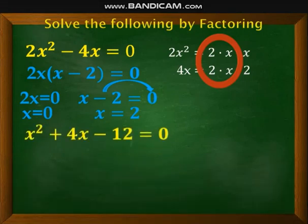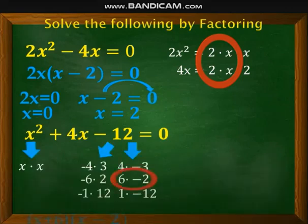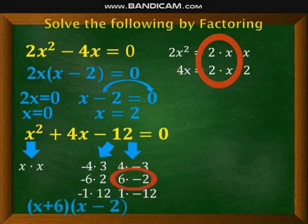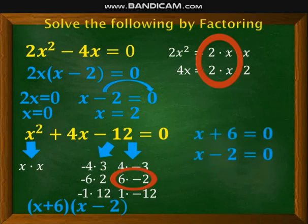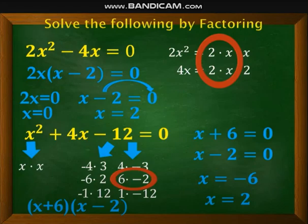What about this one? We factored this earlier, I just added equal 0. Same process. These are the factors, and 6 and -2 are what we chose to get positive 4. Then the factors are (x + 6)(x - 2). Then each factor equate to 0, x + 6 = 0 and x - 2 = 0. What's the final answer? x = -6 and x = +2. You need to know how to factor to get the final answer. That's why solve the following by factoring.